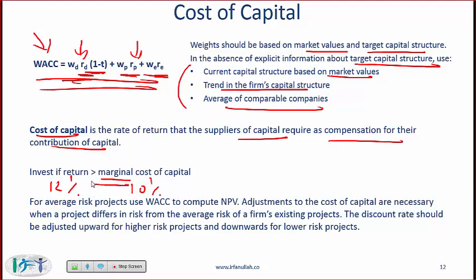The term marginal is important — it means the cost of raising additional capital. Since you are doing a project in the future expecting a return of 12%, that 12% has to be compared with the cost of raising additional money. Even if your past cost of capital was 13%, you still do the project because the marginal cost is 10%. On your exam, a classic question gives you a marginal cost of 10% and a historical cost of 14%, asking whether you compare 12% with 10% or 14%. You compare with 10% — that is the marginal cost of capital.